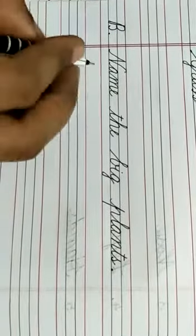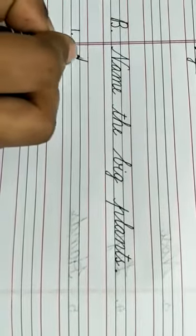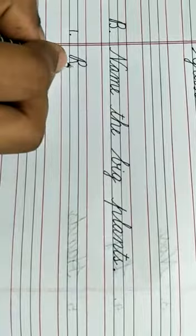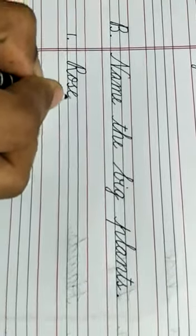Now, name the big plants. What does this mean? It means that you have to give the names of those plants which were big. So which were they? Can you remember? Yes, very good. Number 1 was rose, right? R-O-S-E, rose plant.